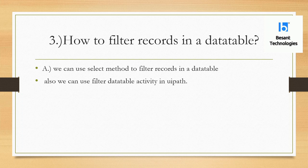If you have to filter records in a data table, there are two methods. You can use the Select method — on whatever data table you have, type a dot, type Select, and inside the brackets give your conditions like column name equal to value, with as many conditions as you want. Or else you can directly use the Filter Data Table activity, specify the number of conditions, and use it inside your workflow.